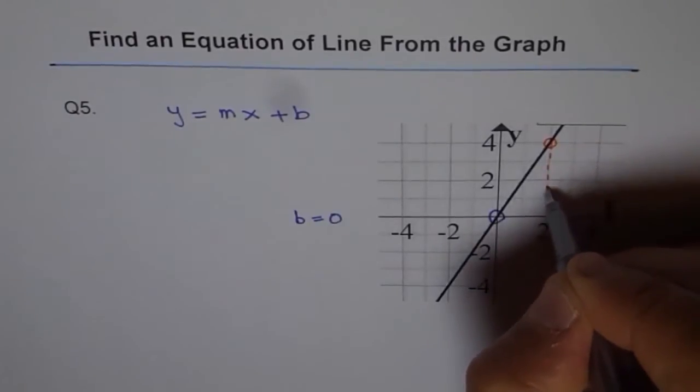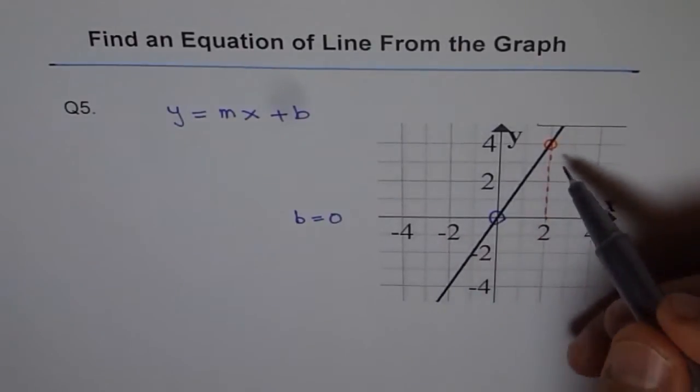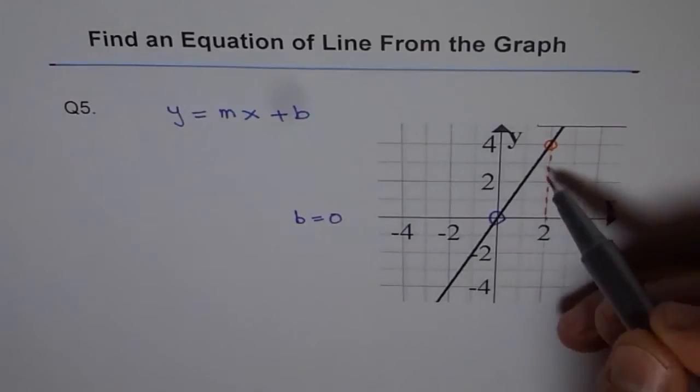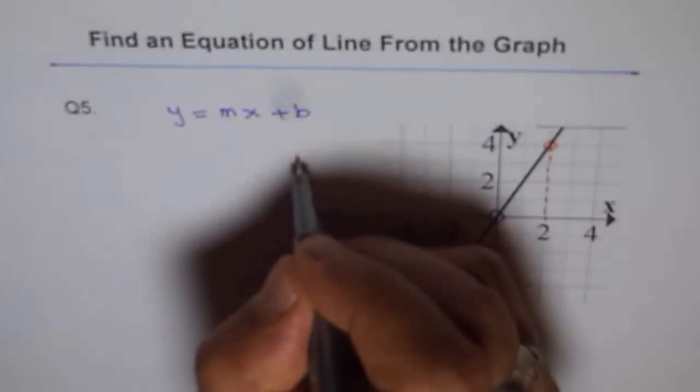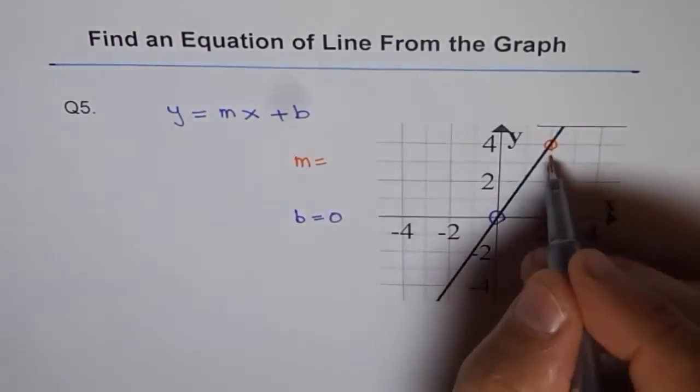The rise is this. Do you see that? The rise is how much? From 0 to 4. So we can say slope m equals to rise of 4.